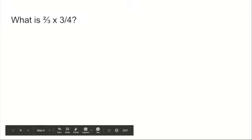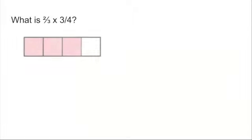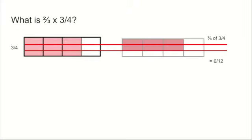Now the final example — you can pause the video to try it on your own. I'll first explain the picture method. I'm going to draw three quarters, three fourths, and split it using horizontal lines — it's easier for this example. I'm going to split it into three pieces using those horizontal lines. I need two thirds, so I'm going to take one strip, two strips — those six pieces at the top. Two thirds of three quarters is six twelfths.